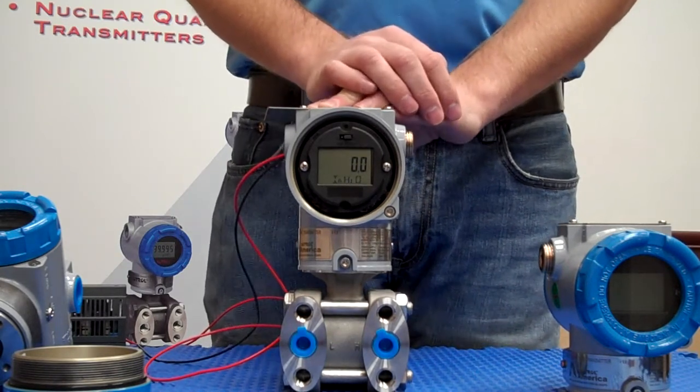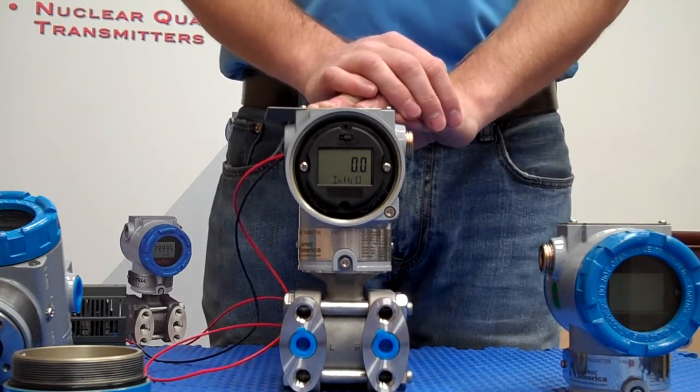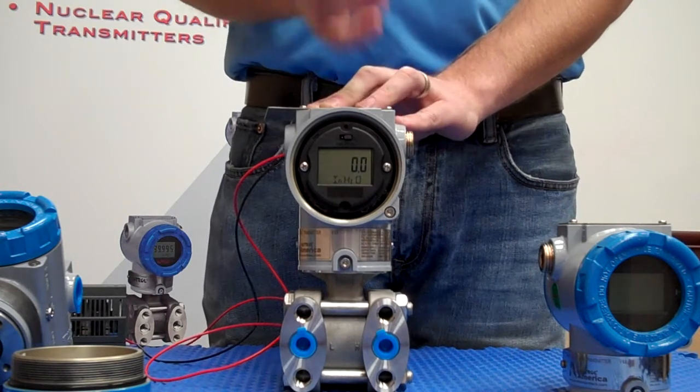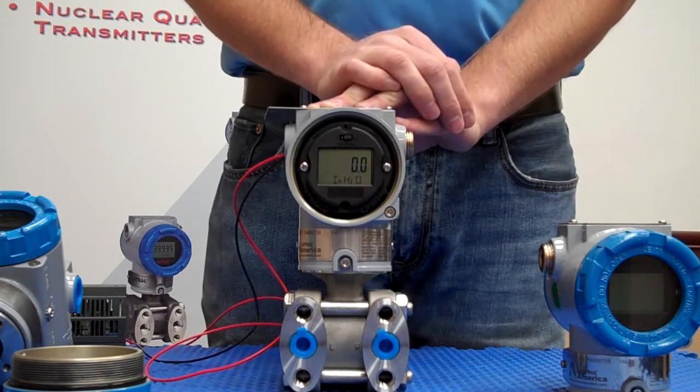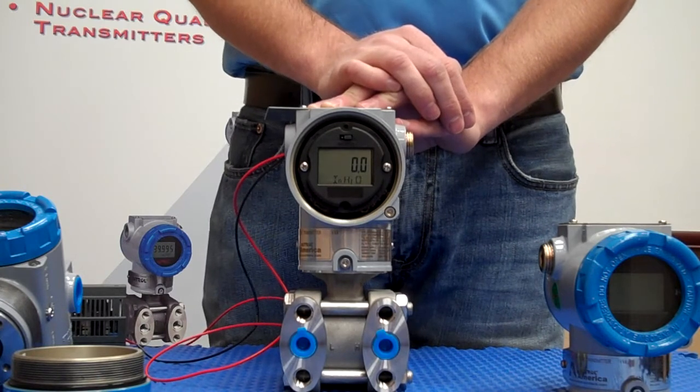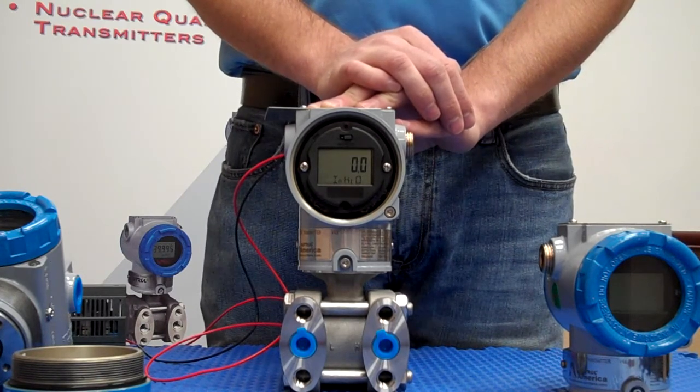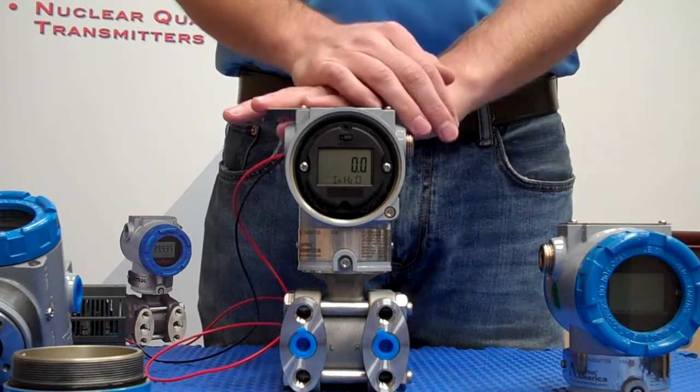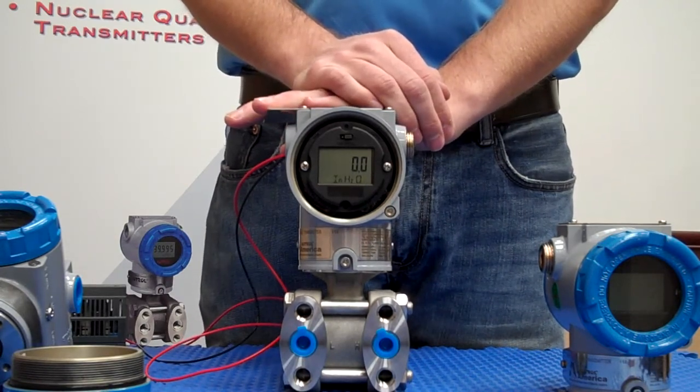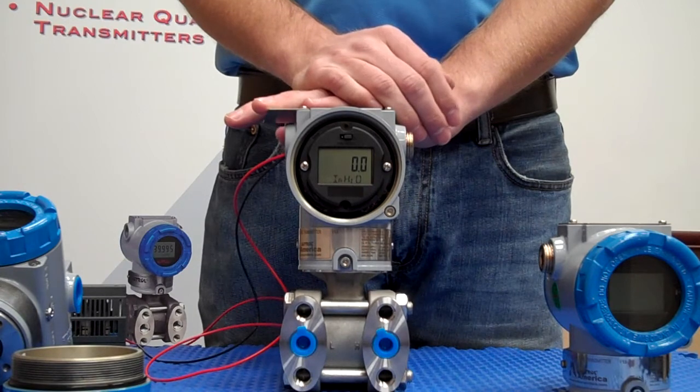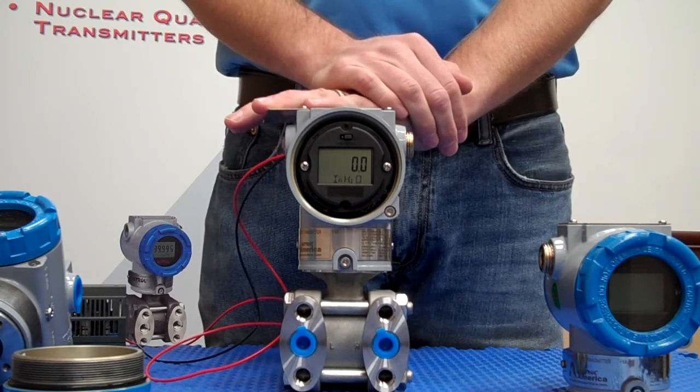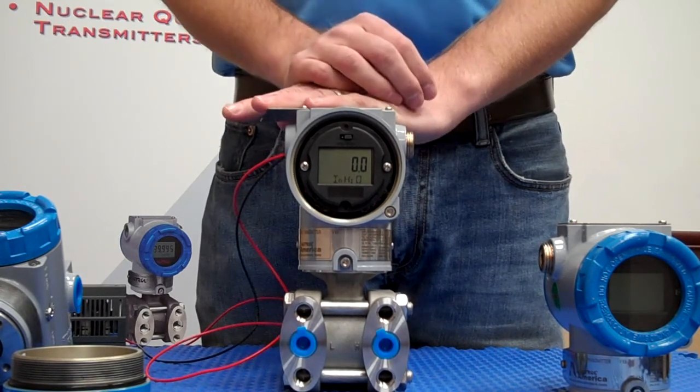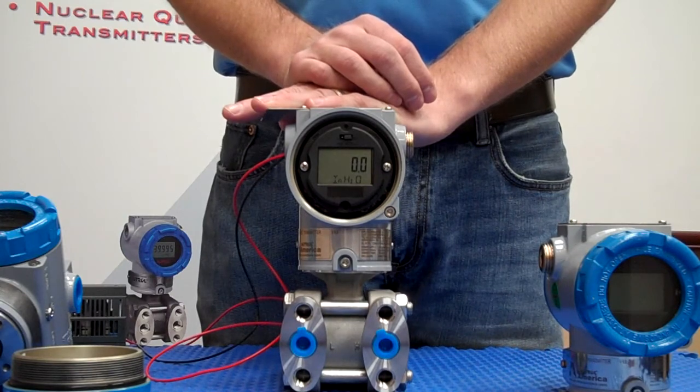It is very important that before starting the zero trim operation you have a true zero applied. This means either blocking off from your process by using a manifold or using a block and bleed valve below a pressure transmitter, but separating it to where we can correct any bias from installation effect. So to do this, we have to totally isolate it from the process to get a true baseline zero where it's installed.